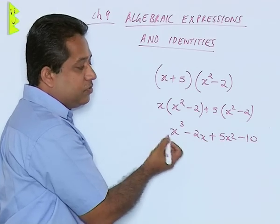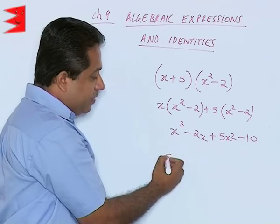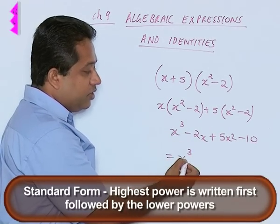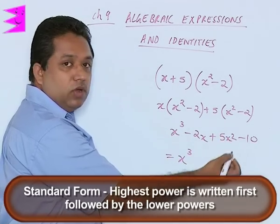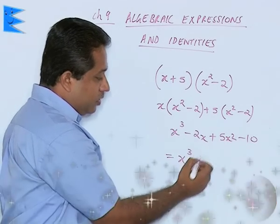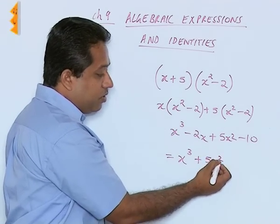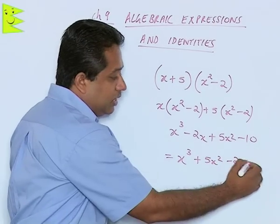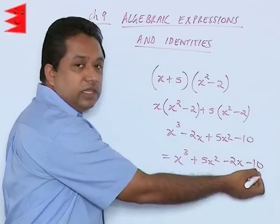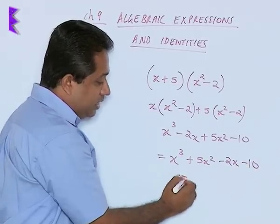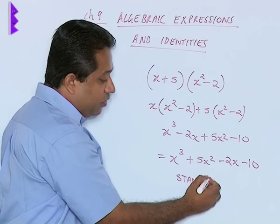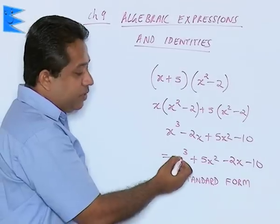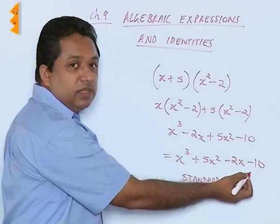Now, all these are unlike terms — we cannot add or subtract them. But when we write the final answer, we have to write it in standard form. Standard form means the highest power will be written first, then followed by the lower powers. So we have the highest power here as 3, then we have 5x square because the power of x is 2, then we have minus 2x because the power of x is 1, and then minus 10, which is without a variable and will be at the end. This is called writing in standard form — arranging in decreasing powers where the highest power is written first and the least power is written at the end.